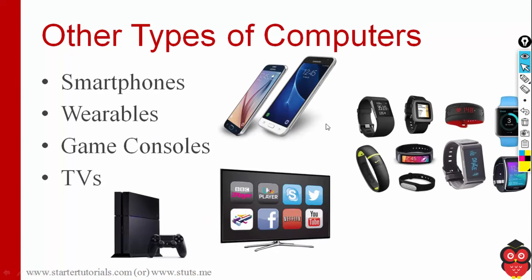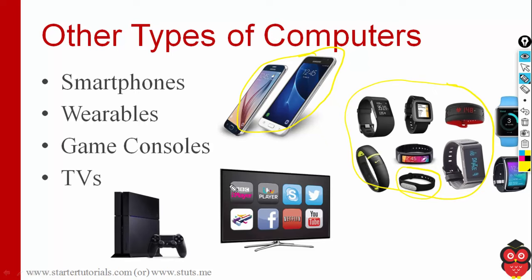There are also other kinds of computers that do computations. We have smartphones — a smartphone is a mobile phone through which you can access the internet. We also have wearables, like watches and bands that can access the internet or measure health metrics such as heart condition and diabetes levels. We also have gaming consoles, which now come with software to access the internet and other applications.